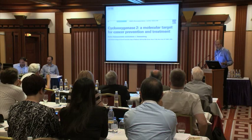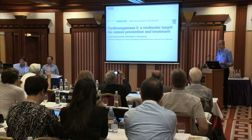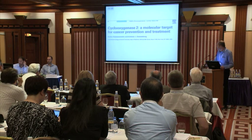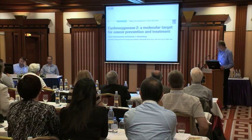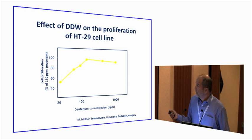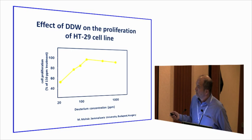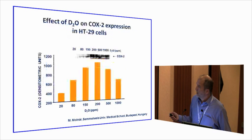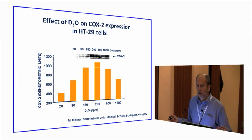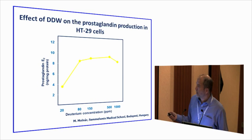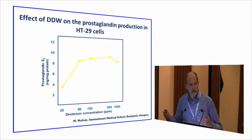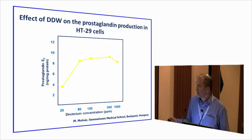The COX2 gene and enzyme are considered targets for cancer prevention. We checked whether DDW can influence expression of these genes and the COX2 enzyme. In an in vitro study following HT-29 colon tumor cell line growth: in normal water the cells grew normally; in DDW, cell growth was inhibited. At the same time, reducing the deuterium concentration reduced the COX2 enzyme content, and there was a strong correlation with prostaglandin levels — we suppressed the gene, suppressed the enzyme, and that resulted in lower prostaglandin concentration.